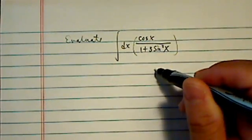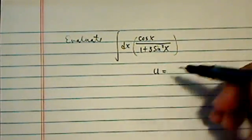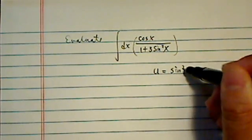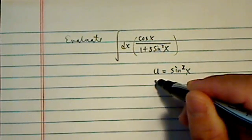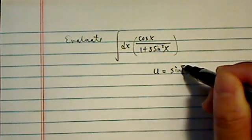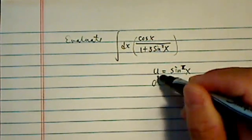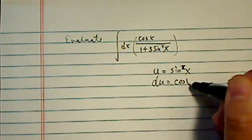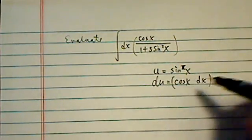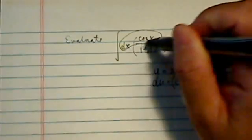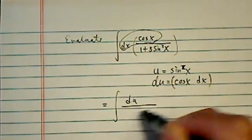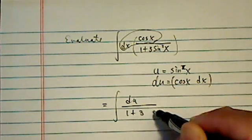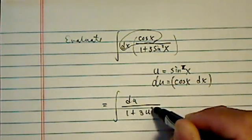First thing we're going to do is we're going to use variable substitution, make it look a little more pleasant. Actually, we're going to leave the sine x, then du is equal to cosine x dx. That conveniently replaces the numerator here, so we have du on top, and then we have 1 plus 3 u squared.